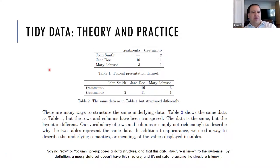So the paper starts with this layout right here. It just presents some toy data, some really simple data where John Smith actually did not receive treatment A but did receive treatment B. And the result was two. Jane Doe received both treatments with results of 16 and 11. And Mary Johnson received both treatments with results of three and one. And the paper points out that this representation of the data is really exactly the same as this representation of the data where the names are across the top and the treatments are down the side. Everything is just transposed.